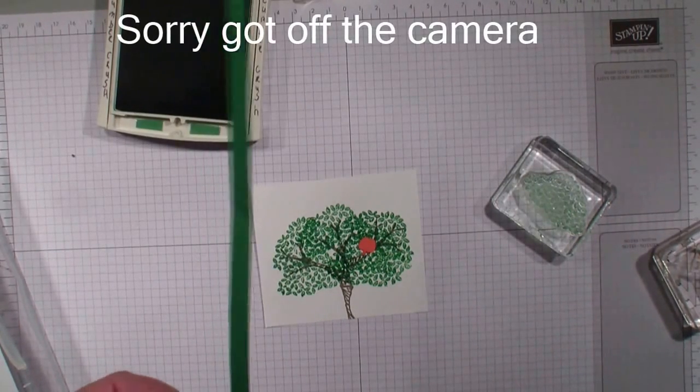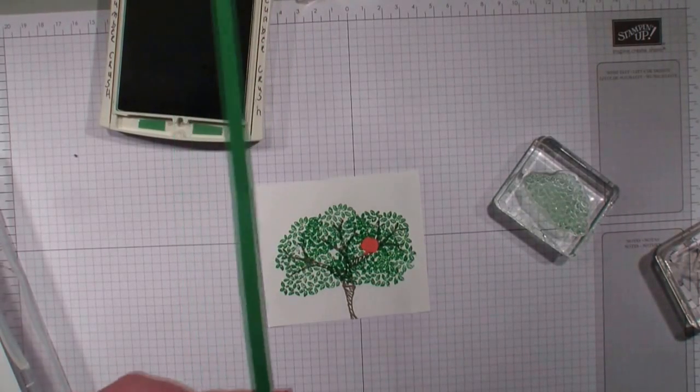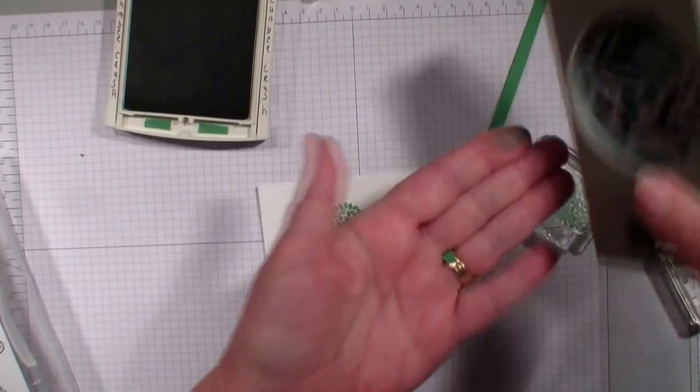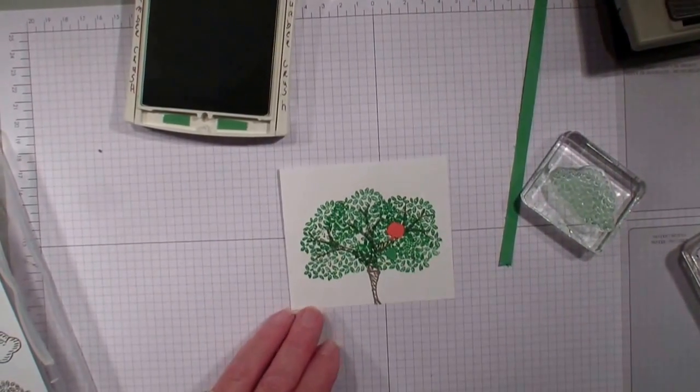So I am going to put that in and punch. Well of course my fingers aren't working. There we go. So I am going to punch the little leaf and then I am going to put that on my tree.